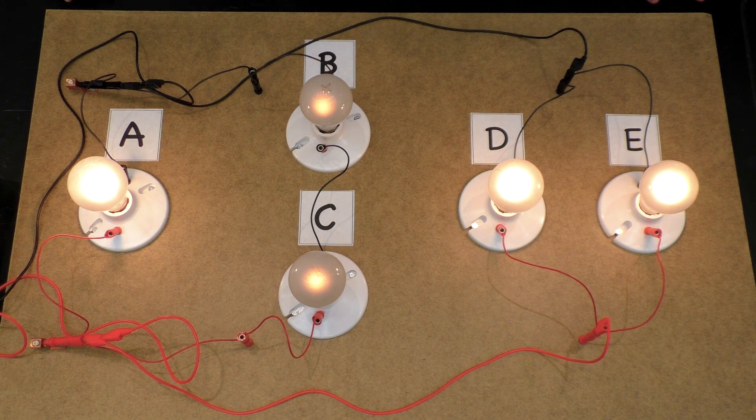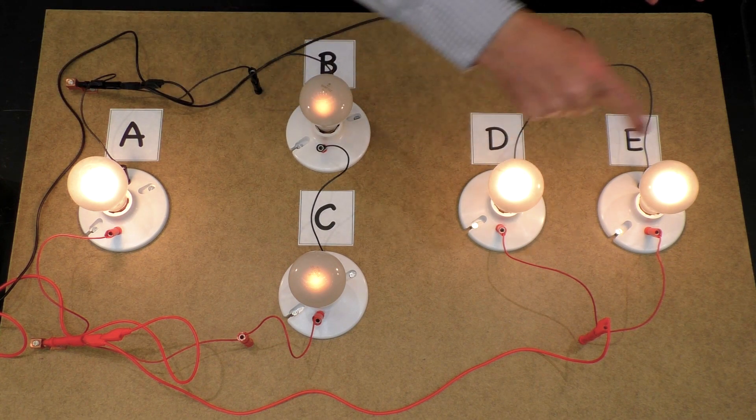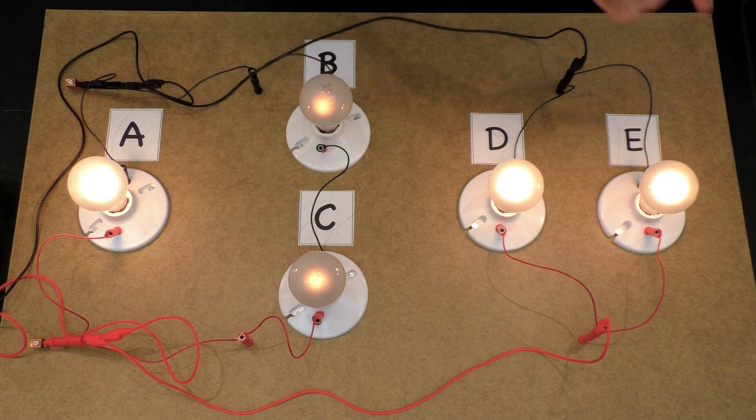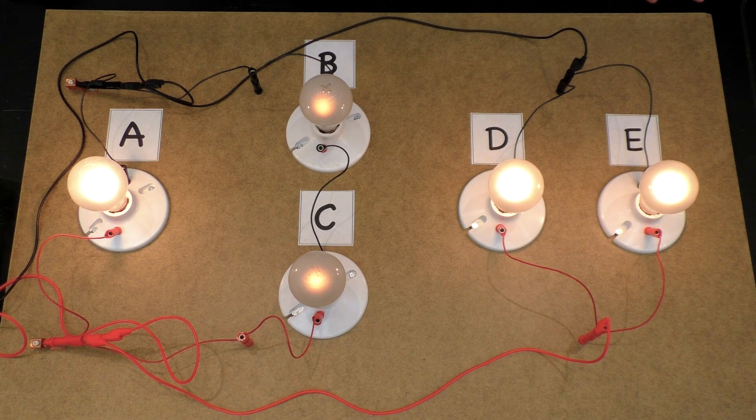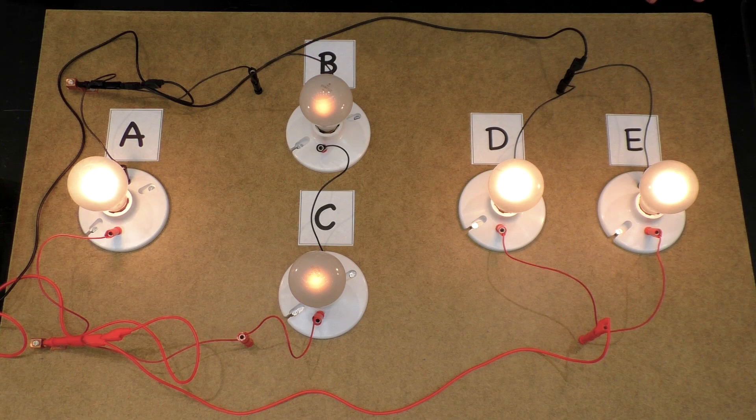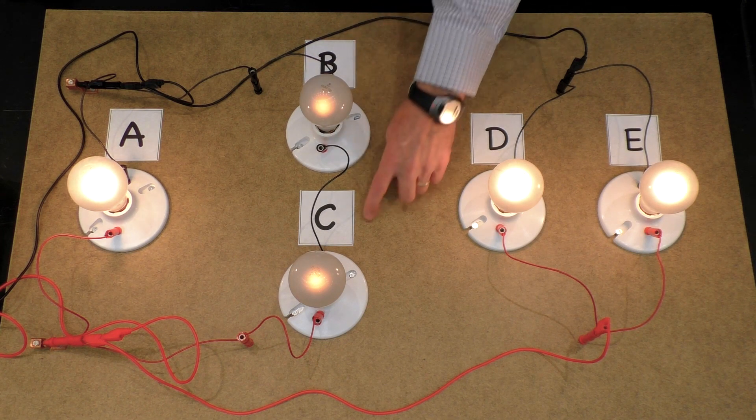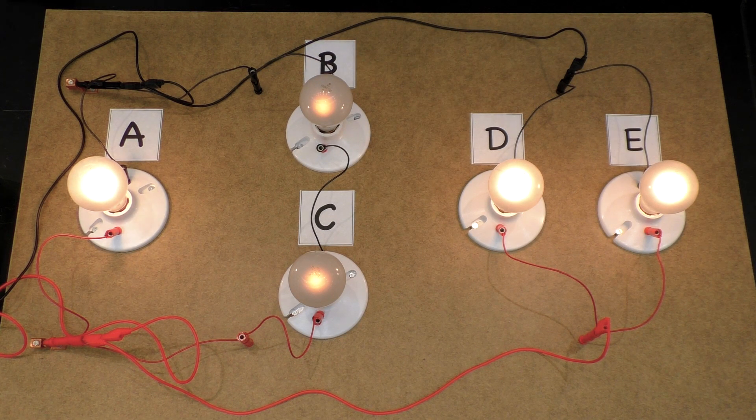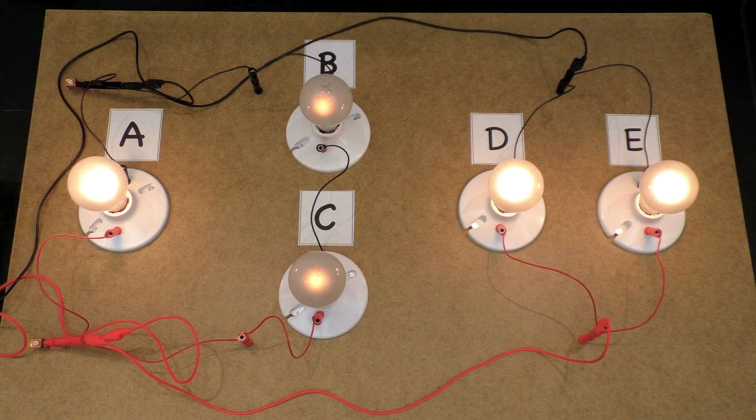Okay, what do we see? One, two, three bulbs, A, D, and E, all burning with the same brightness. B and C are dimmer, visibly. And why is that?